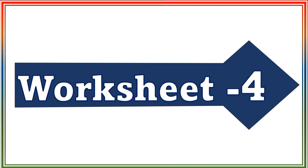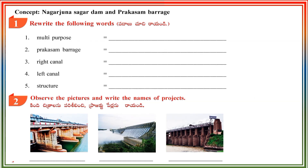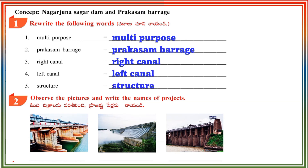Worksheet 4 — Concept: Nagarjuna Sagar Dam and Prakasambaraj. Section 1: Rewrite the following words. Multi-Purpose. Prakasambaraj. Right Canal. Left Canal. Structure. Section 2: Observe the pictures and write the names of projects. Daulaswarambaraj. Nagarjuna Sagar Dam. Prakasambaraj.